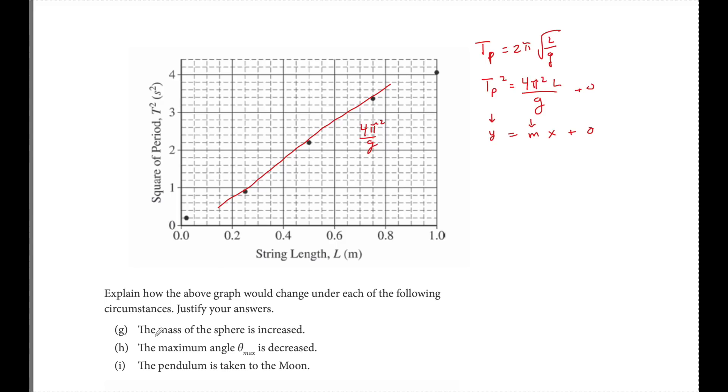Explain how the graph above would change under the following circumstances. If the mass were increased, no change in slope. Make sure you justify your answer. Mass is not in the formula. That's simple as that. What if the maximum angle is different? No change in slope. Theta is not in the period formula.